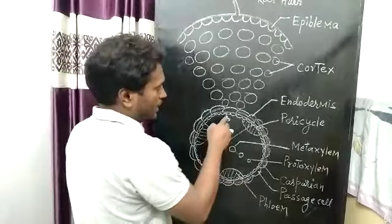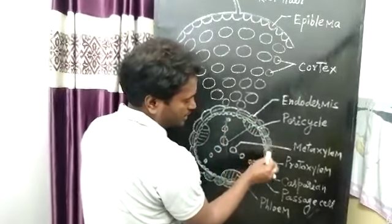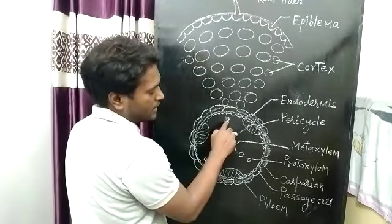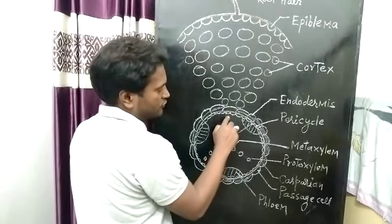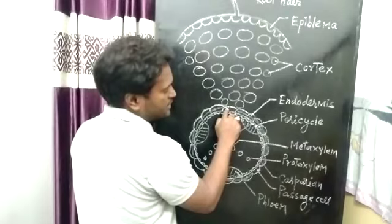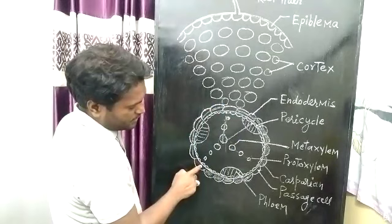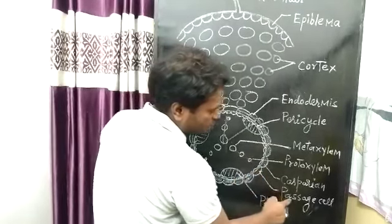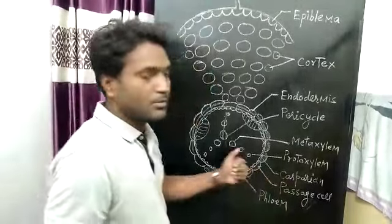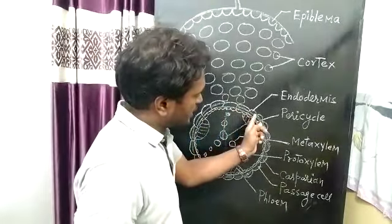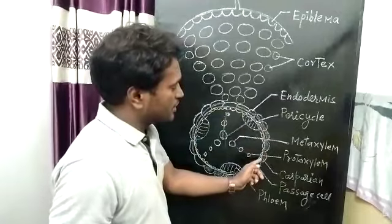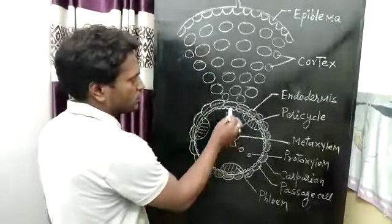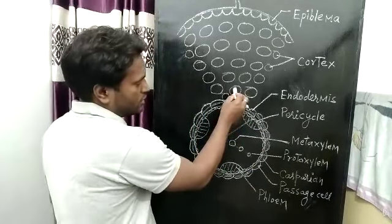One important thing is that the Casparian Strip is present in all endodermal cells, except the cell that is present in front of Protoxylem. The endodermal cell just in front of Protoxylem lacks the Casparian Strip. Such cells are known as Passage cells. These cells help in absorption of water, because the Casparian Strip acts as a biological checkpoint — it acts as an airtight junction and does not allow water to cross. That is why there is only a single pathway, the Passage cell, through which water enters from the Cortex to the Xylem.